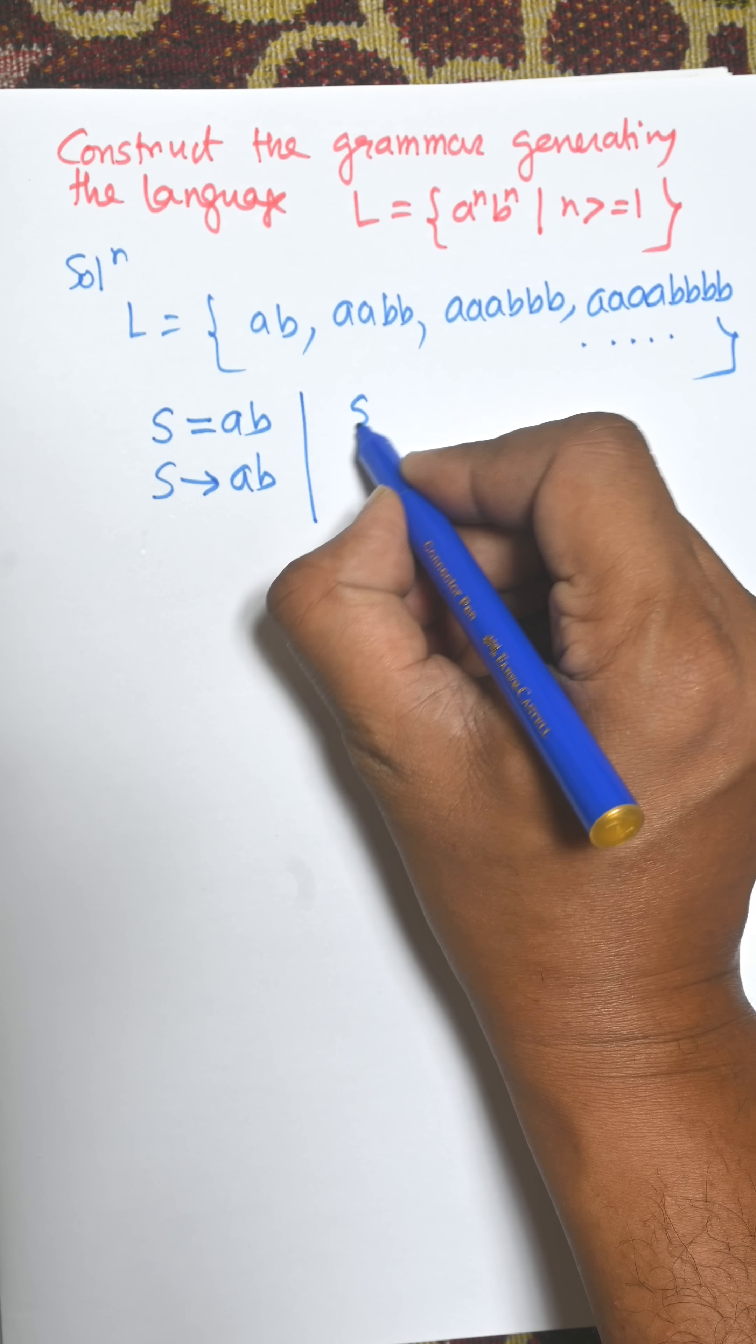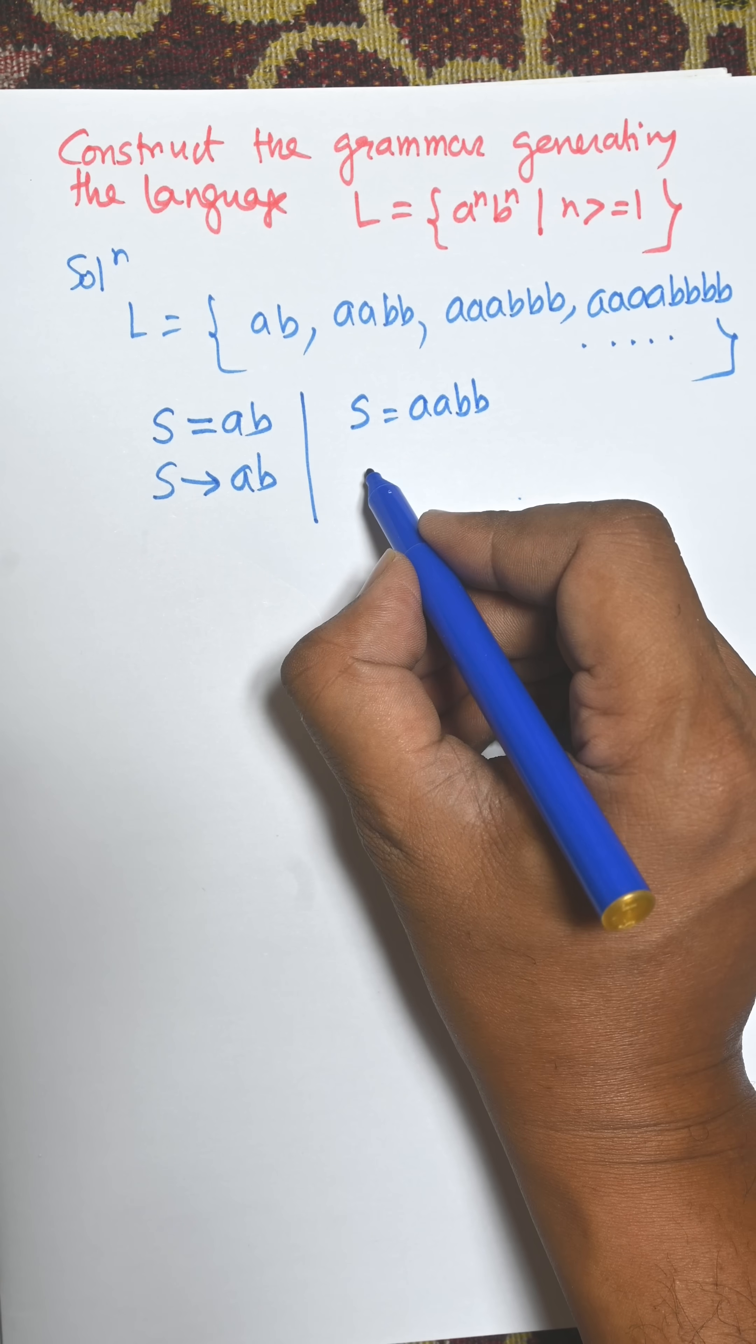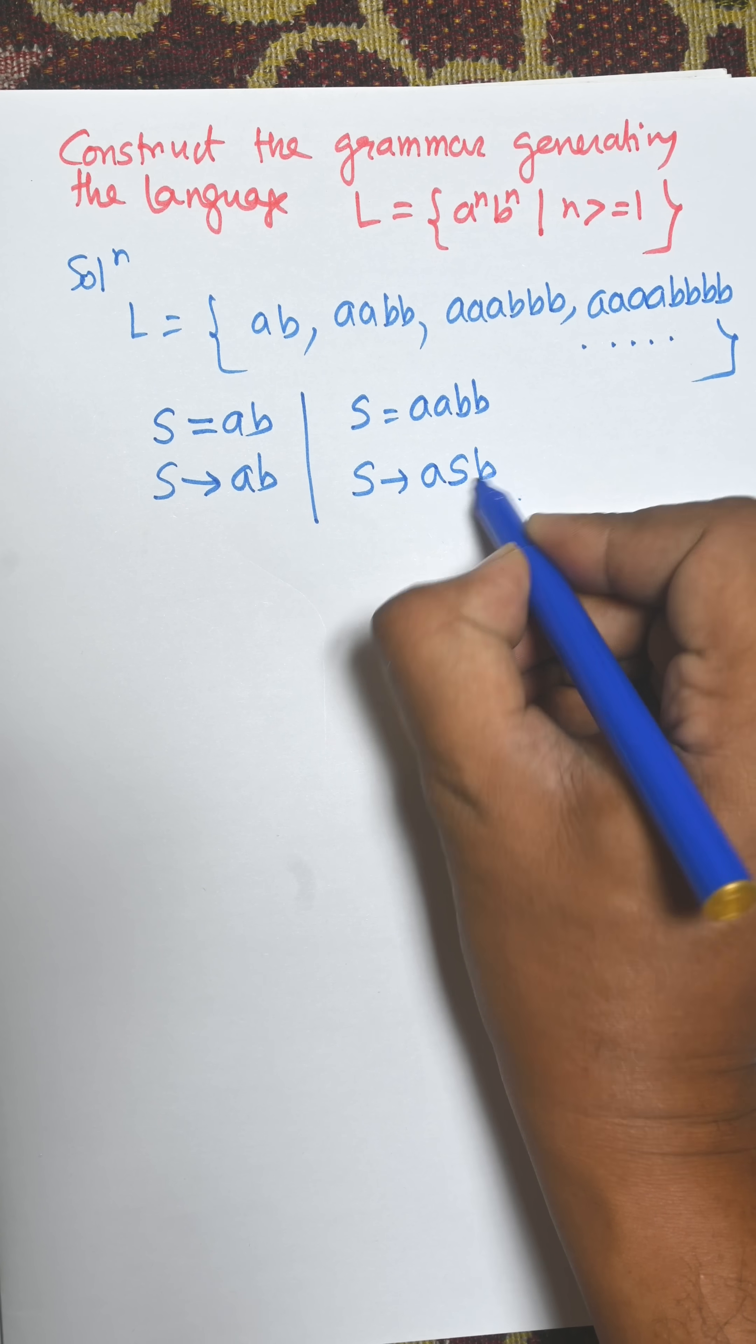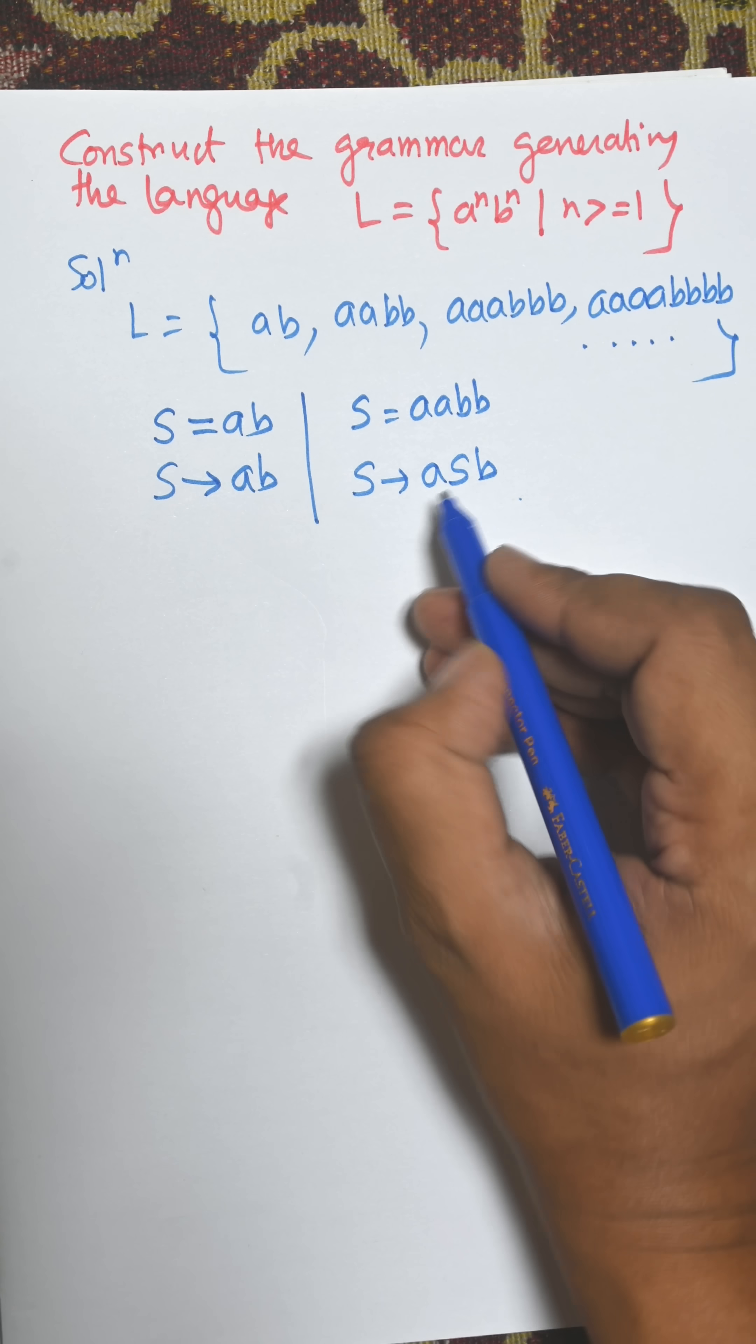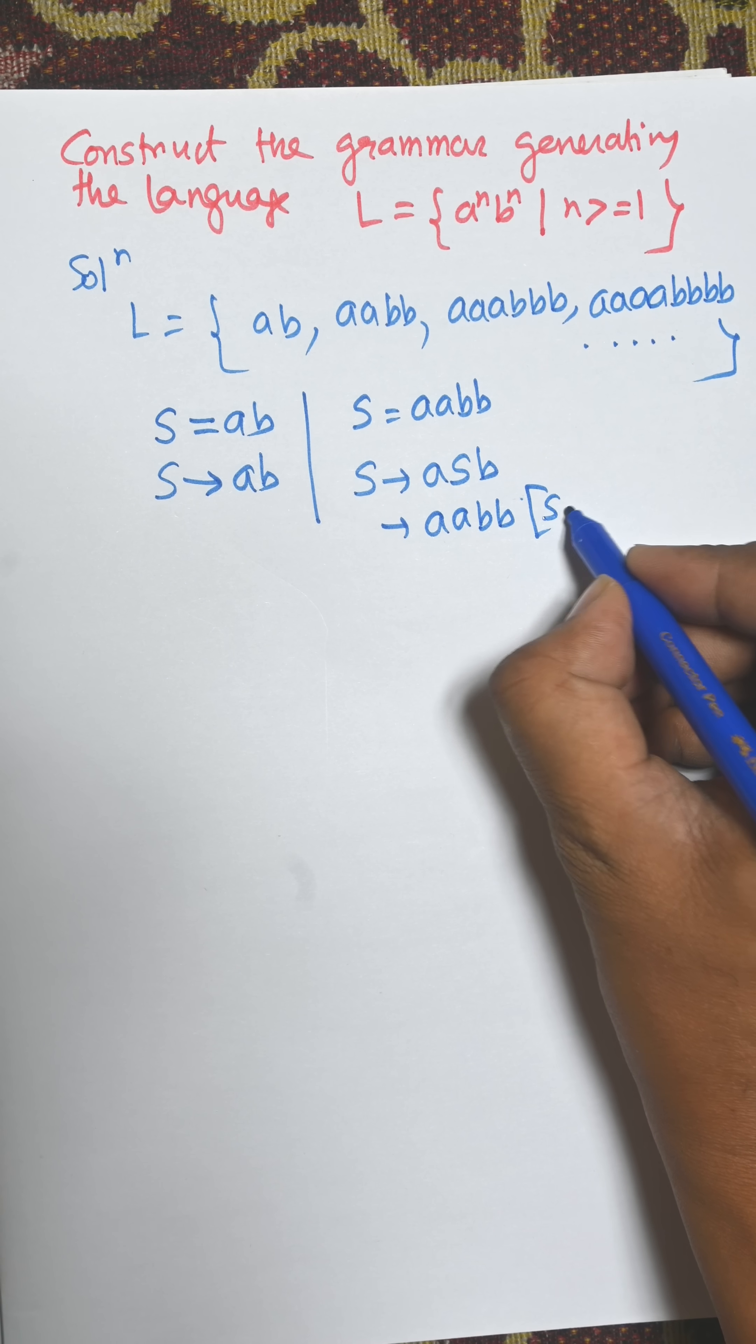Now for S equals AABB, we need to create a production rule. Suppose S goes to AASB. Then for S, we use S goes to AB. So AABB is derived here.